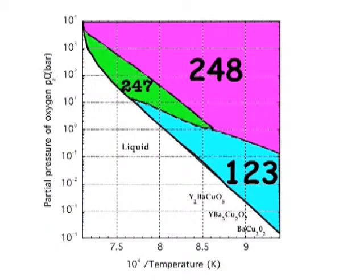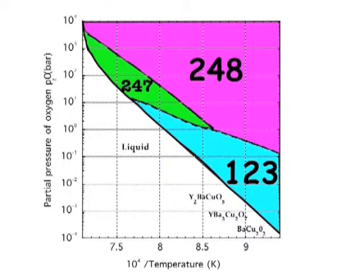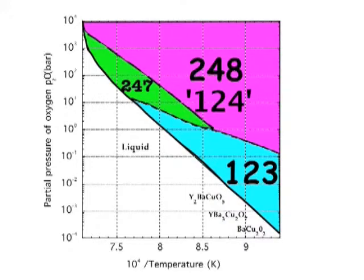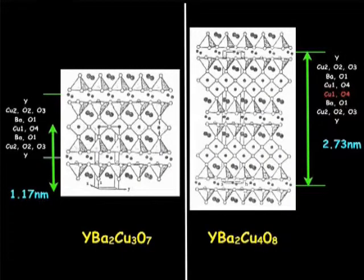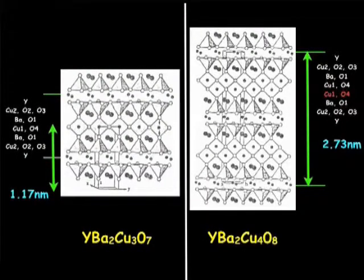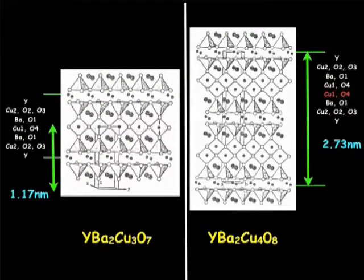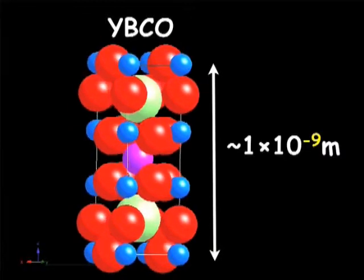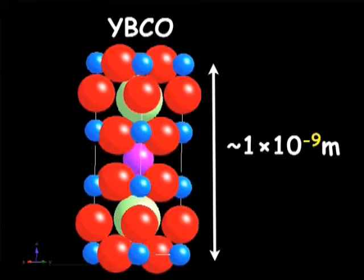At high temperature, yttrium-123 is a stable phase, but if you change the composition, if you add copper oxide, you are shifting the system to stability phase of yttrium-124. Even if you use pure yttrium-123, you also can get yttrium-124 by cooling the sample. The problem is that kinetic of this reaction is very slow. That's why in the end you have yttrium-123 as a metastable phase.